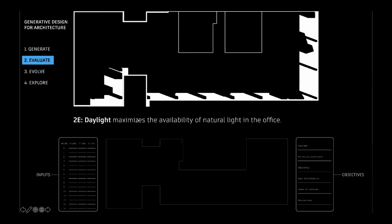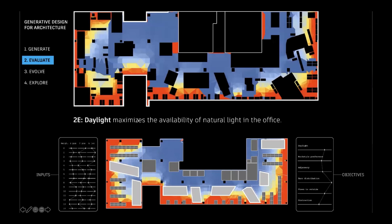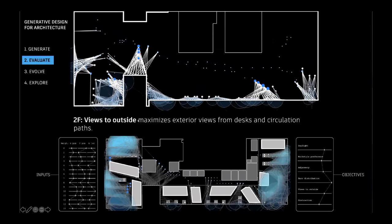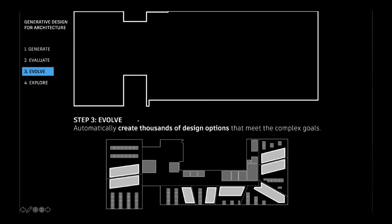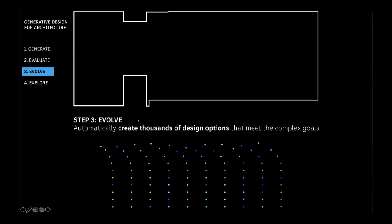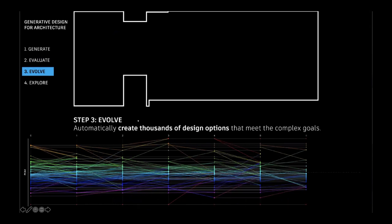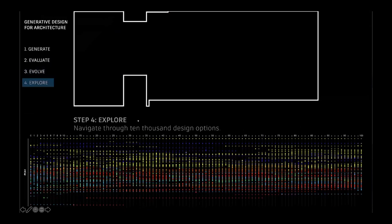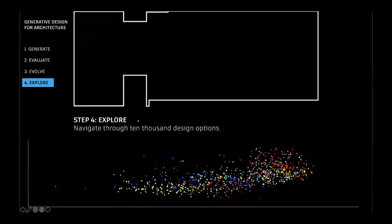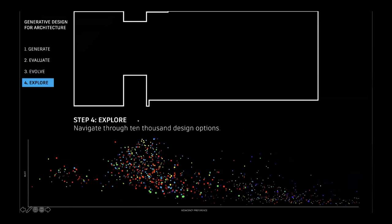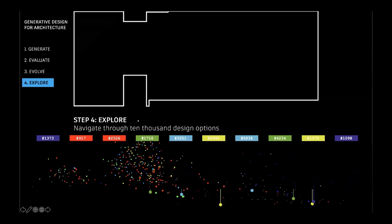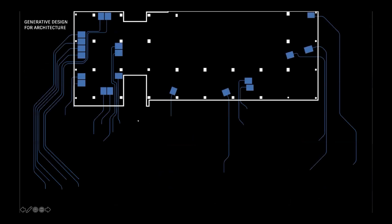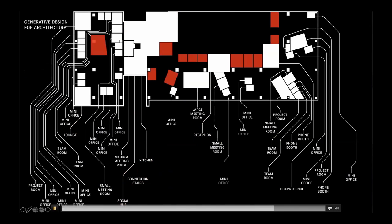To navigate through the various design options you want to map at least two dimensions on x and y axes, but you can also display additional metrics as color and size, allowing you to map a four-dimensional space into two dimensions. The ultimate design chosen was quite interesting — the neighborhoods appear to fan outward from a central space, which was not coded into the algorithm. This seems to be an emergent property arising from the various metrics.